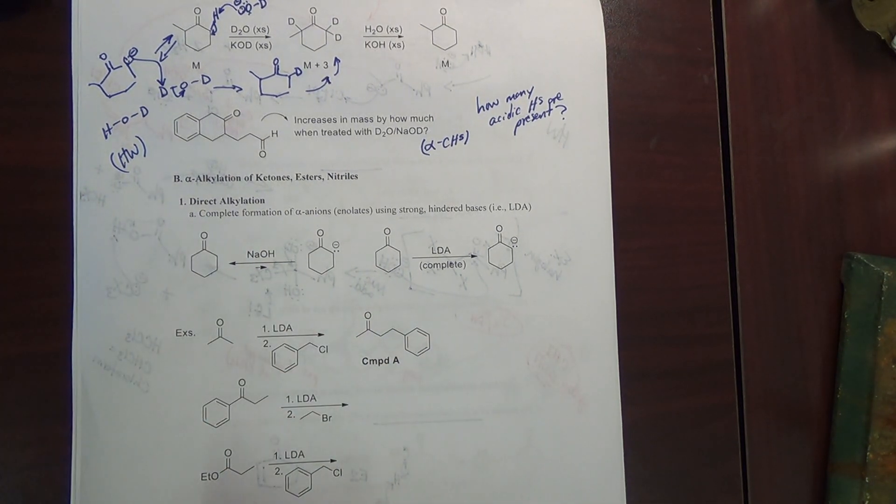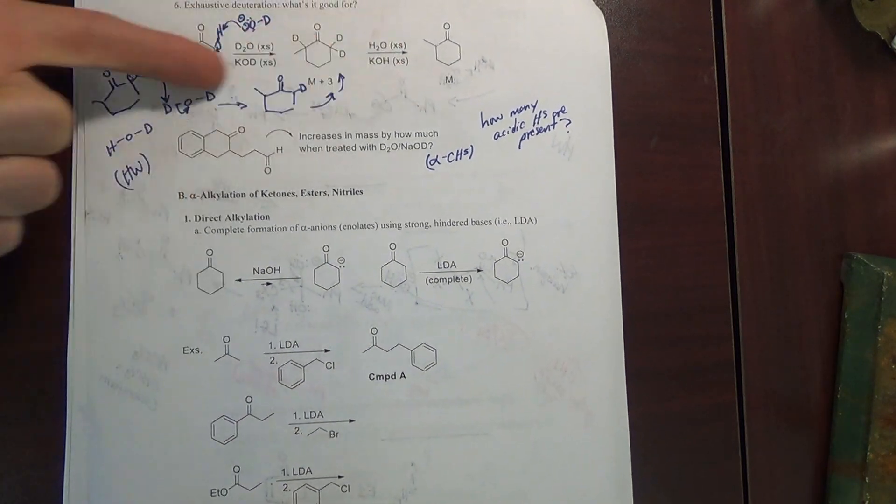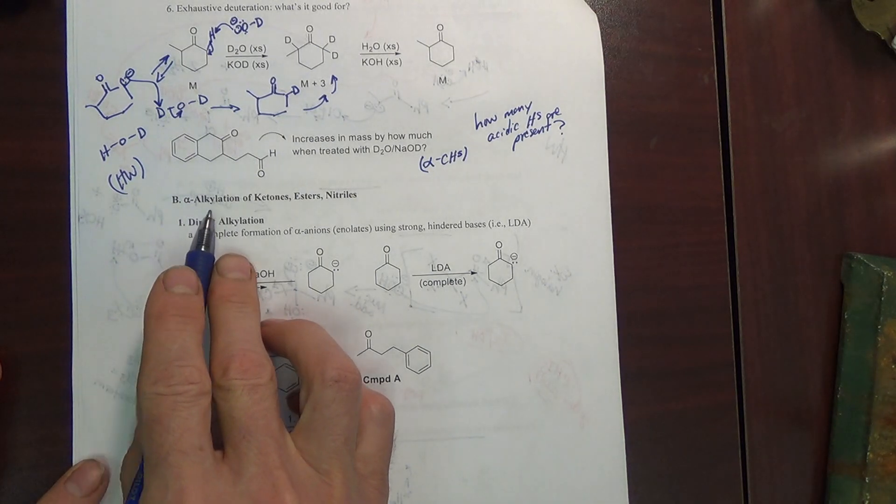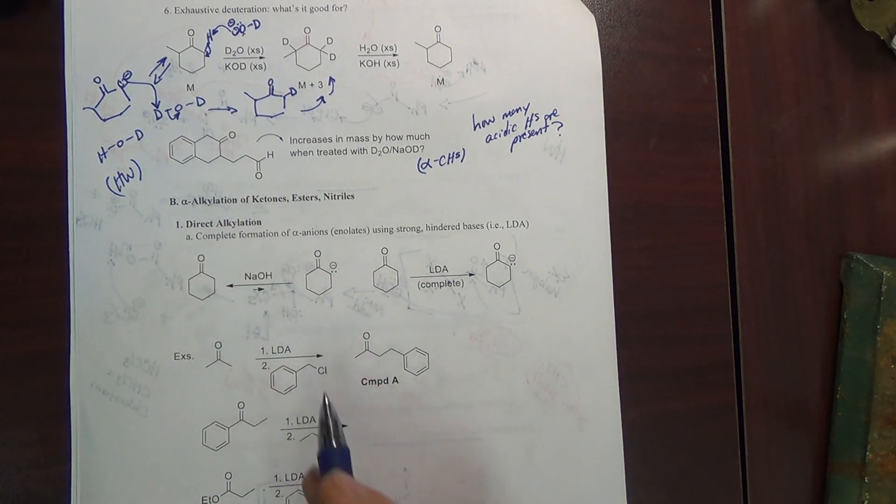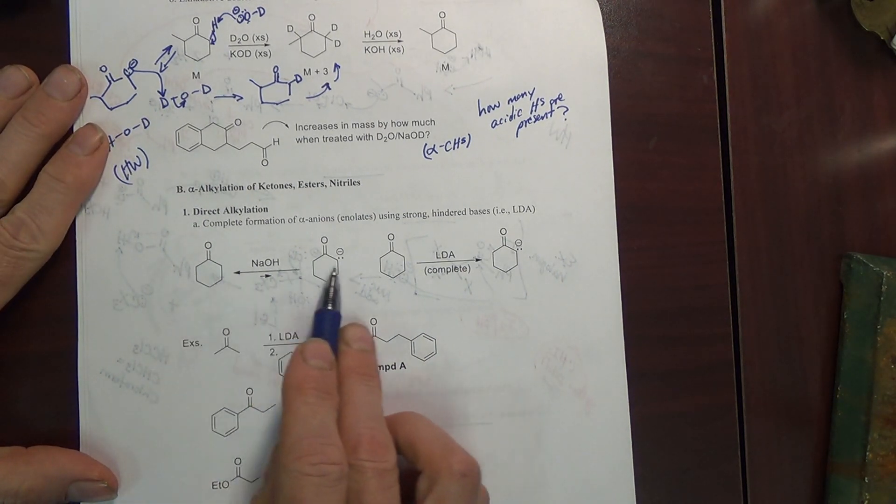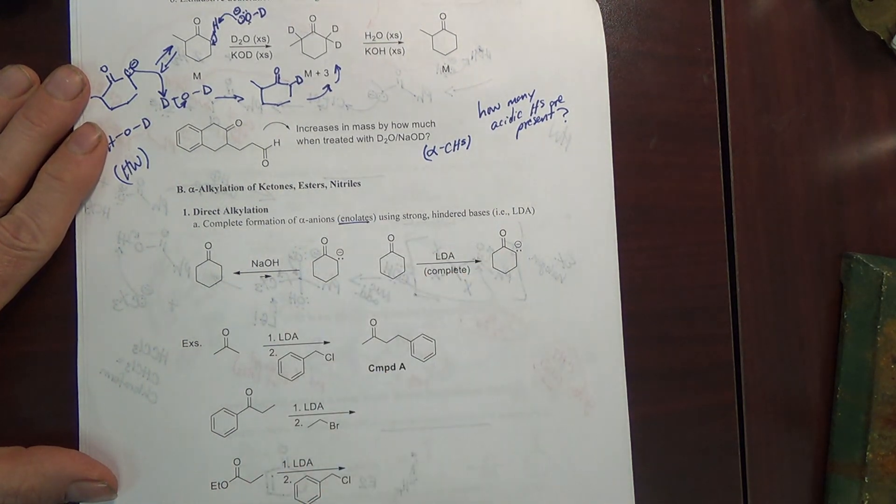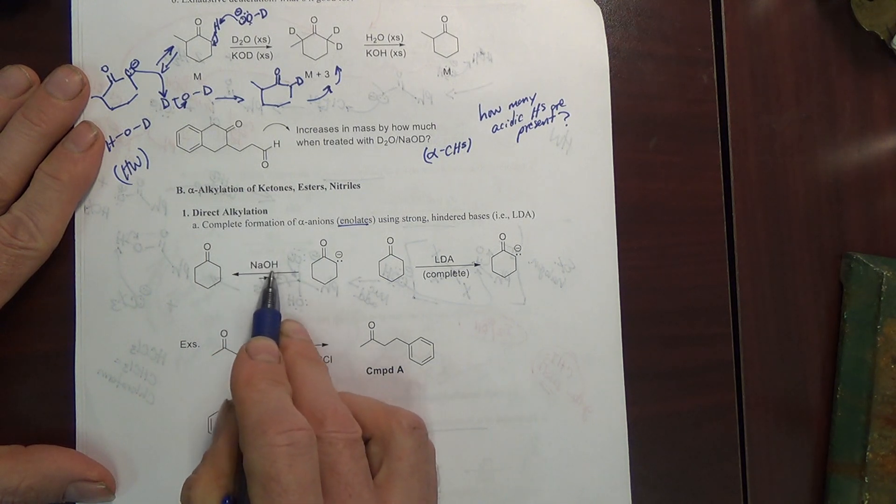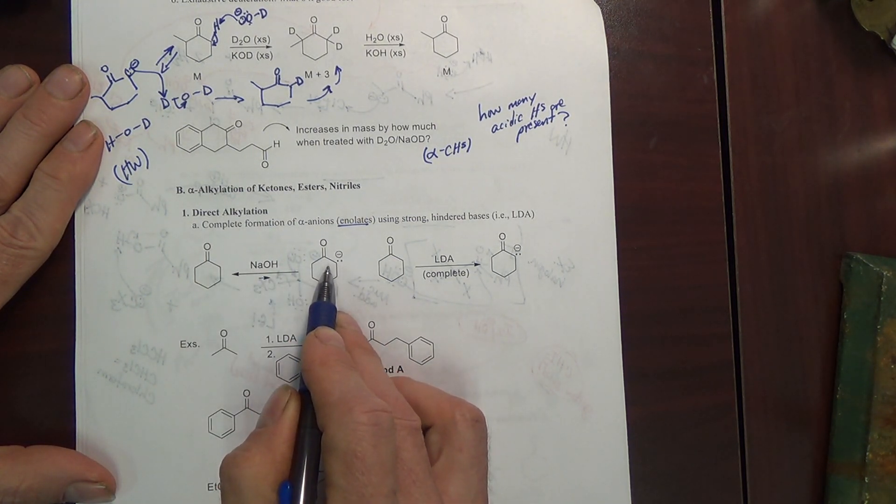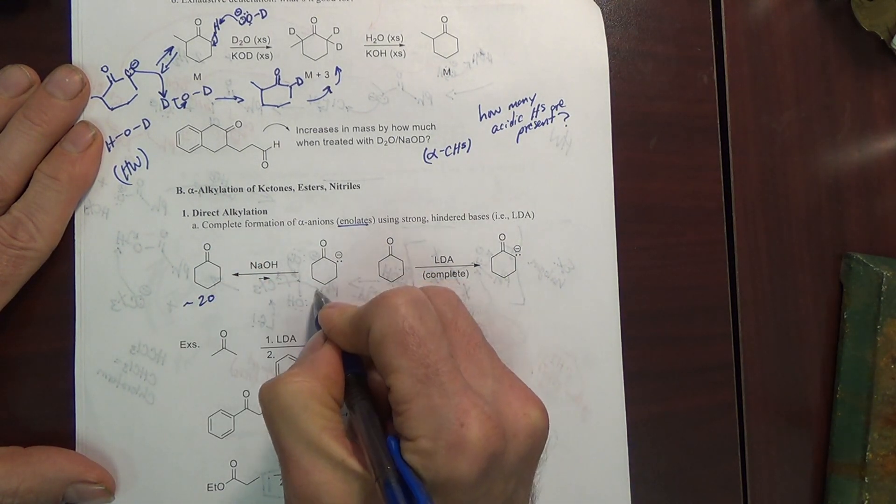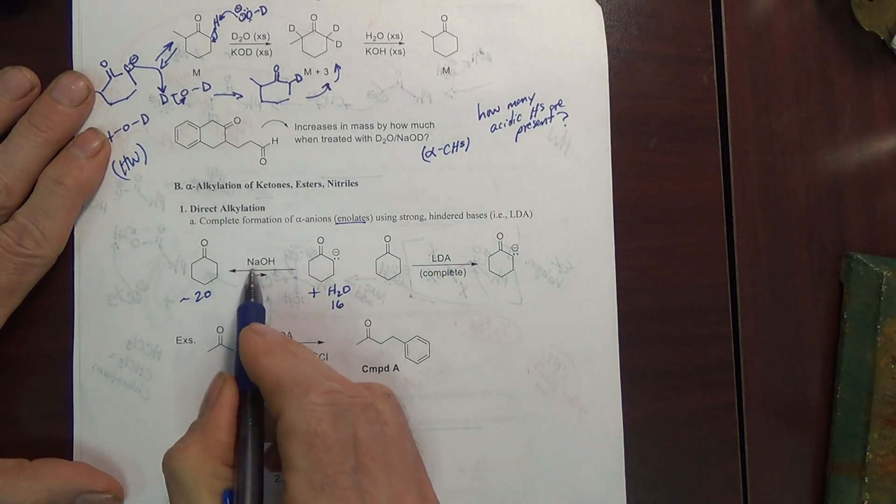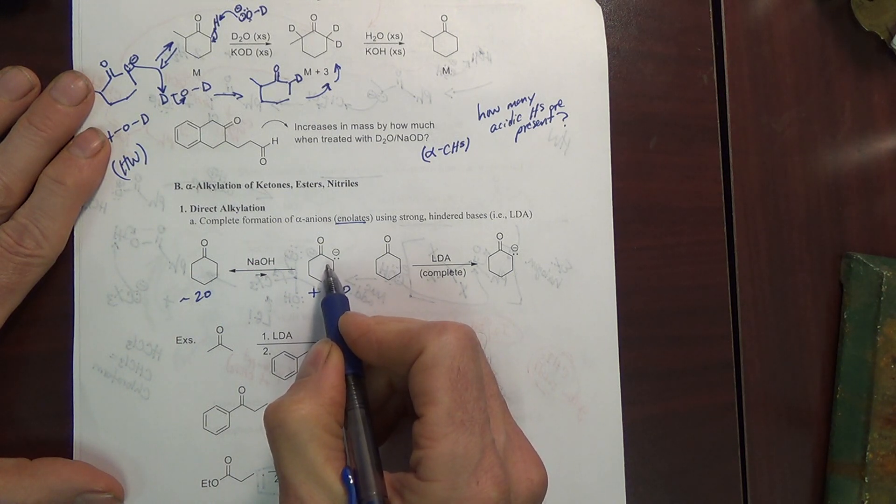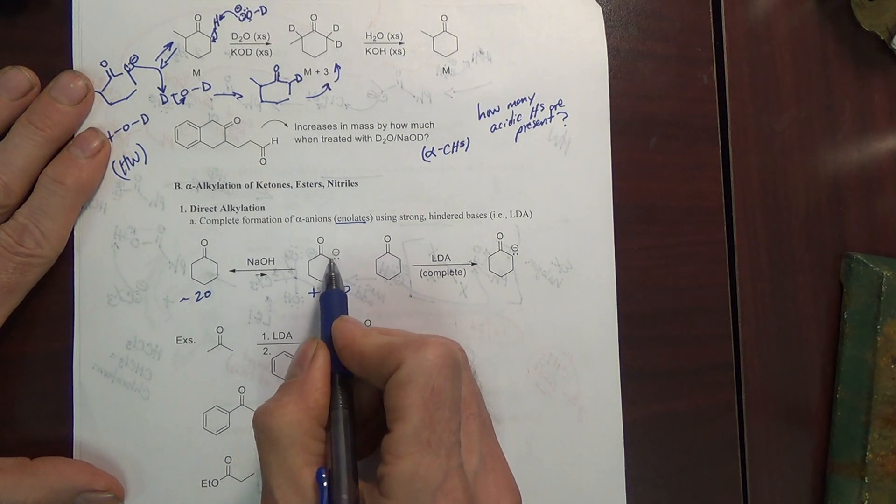This brings us to B. A was alpha halogenation, that was an analogous reaction with the deuteration. B is alpha alkylation, and we will begin with direct alkylation. The first thing is to remember we're making enolates here. The enolate is going to be your nucleophile. But if you try to make an enolate with sodium hydroxide, we know that the enolate is not favored, because this has a pKa of about 20, that plus water would be 16, and the weaker acid is favored. So with hydroxide you do not completely make the enolate.